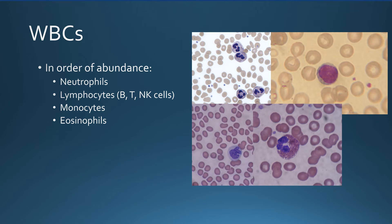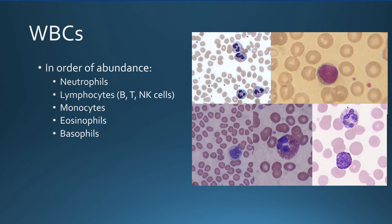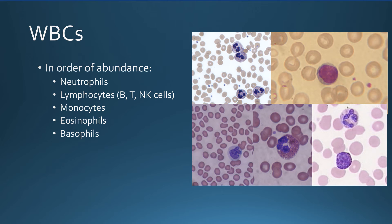Eosinophils are somewhat phagocytic and play a role in fighting off viral and parasitic infections. Basophils are the least common white blood cells and also play a role in defense against parasites. They release chemicals such as histamine that cause inflammation and are involved in allergies.